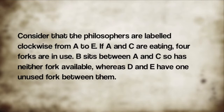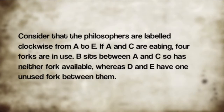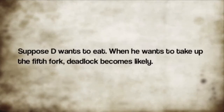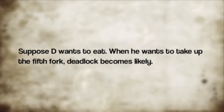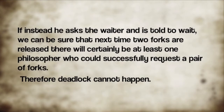Consider philosophers labeled clockwise from A to E. If A and C are eating, four forks are in use. B sits between A and C, so has neither fork available, whereas D and E have one unused fork between them. Suppose D wants to eat — when he tries to take the fifth fork, deadlock becomes likely. If instead he asks the waiter and is told to wait, we can be sure that when two forks are released, at least one philosopher can successfully request a pair of forks.